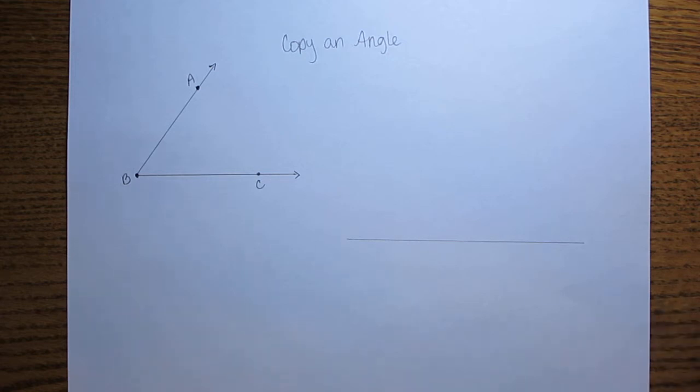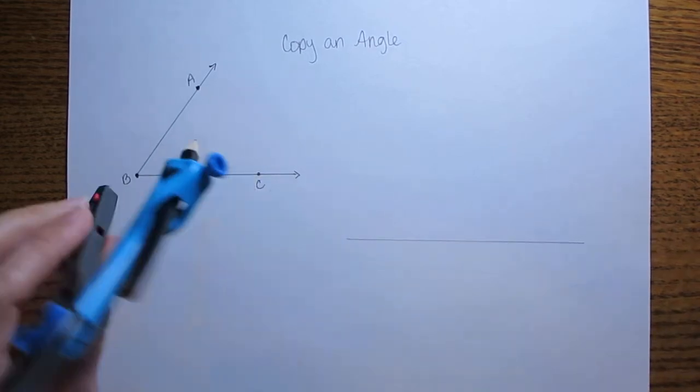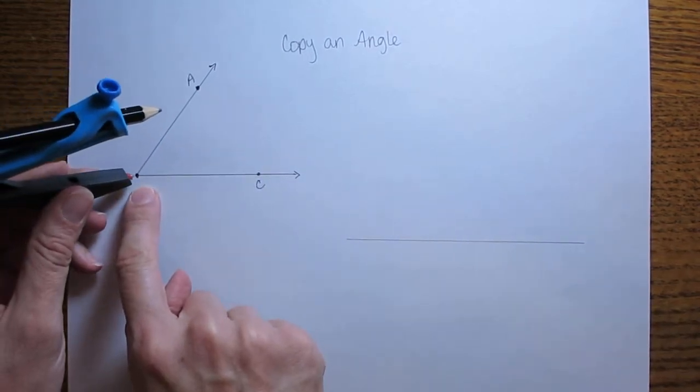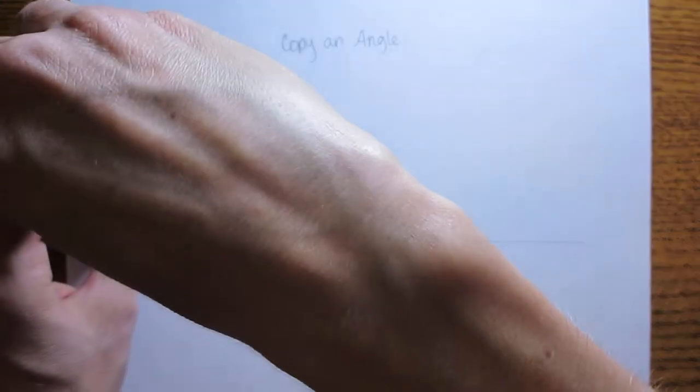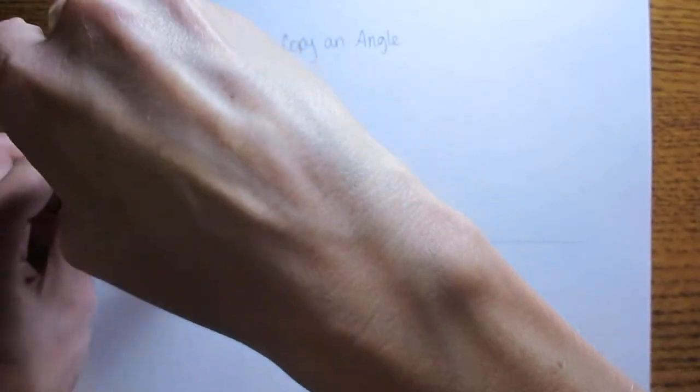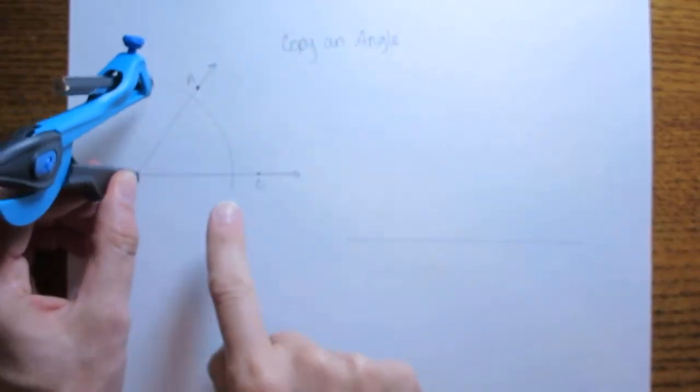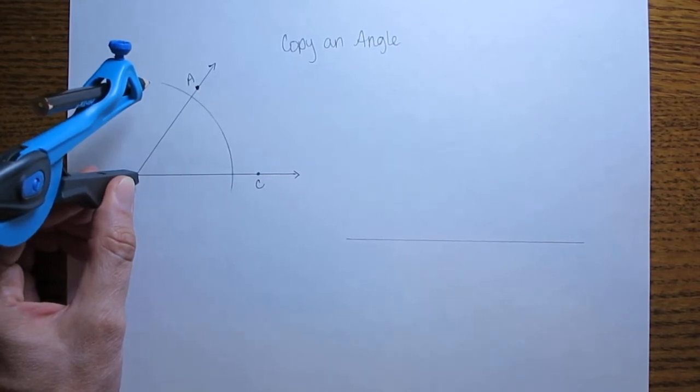Now you take your compass and you're going to put the point of your compass on the vertex of the angle that you are copying. Put that down there and you are going to make an arc that goes through both rays of your original angle.